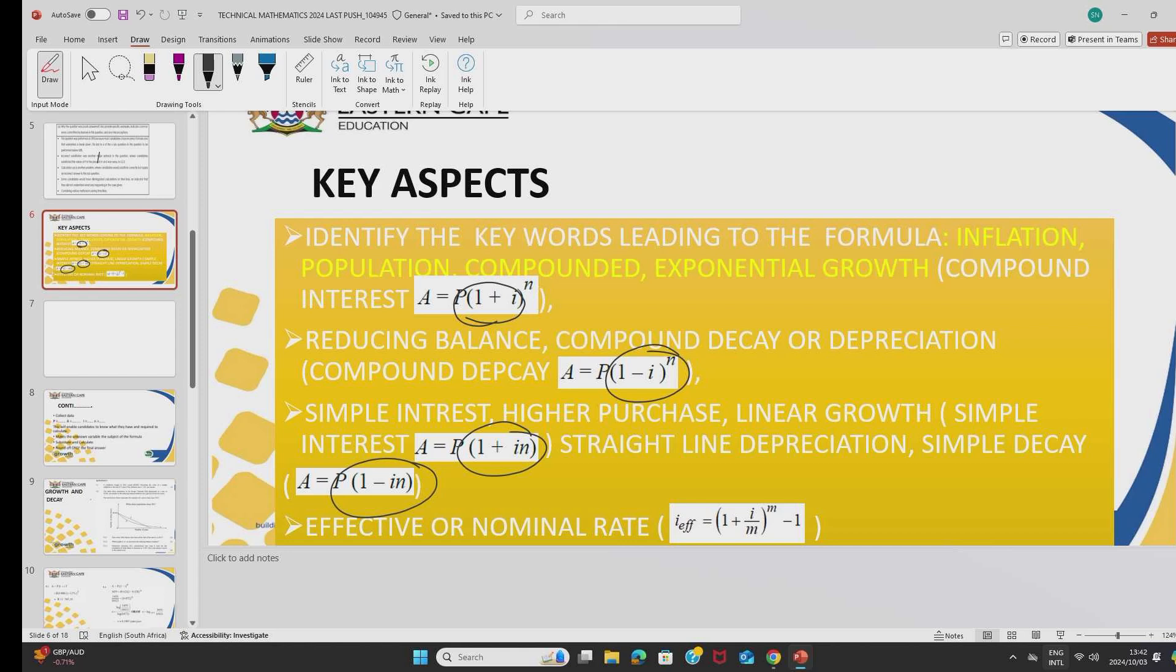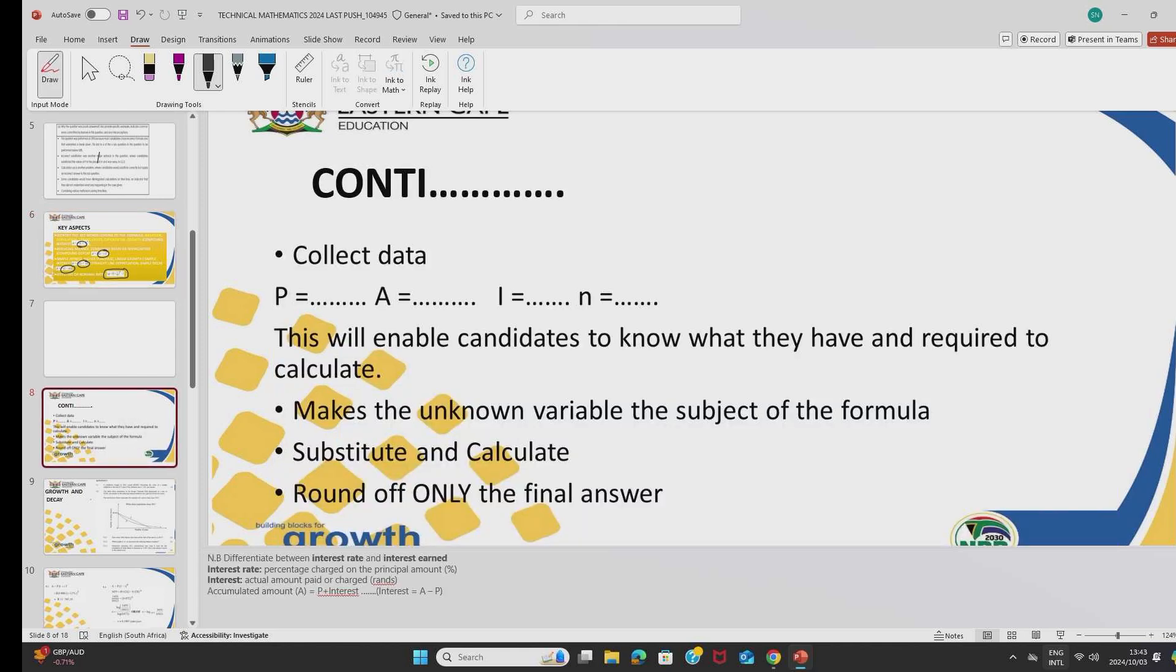And also, there is a question that you'll be asked on effective and nominal rate, which is usually around three marks, and you don't want to miss that three marks. So this is the formula. And do not worry, you don't have to memorize the formula. It is always provided at the back of your question paper in the formula sheet. All you need to do is to recognize the keywords, you go to the correct formula, and you do the substitution.